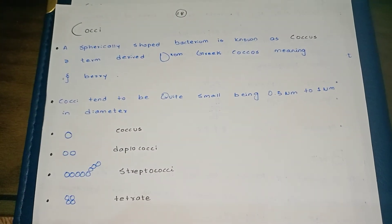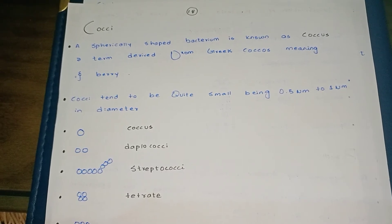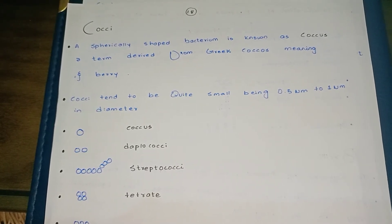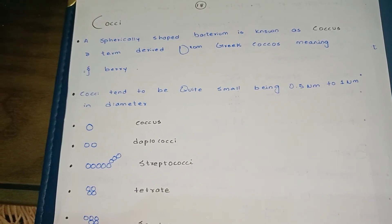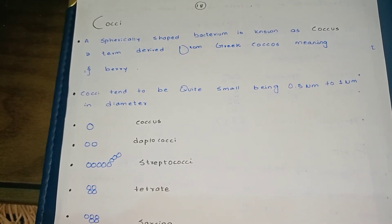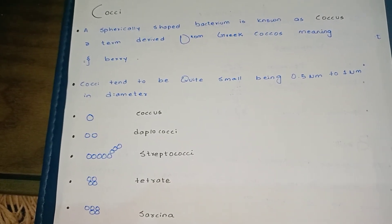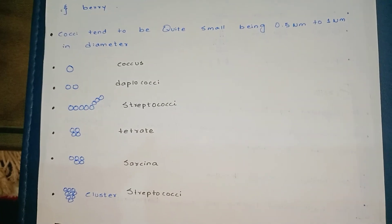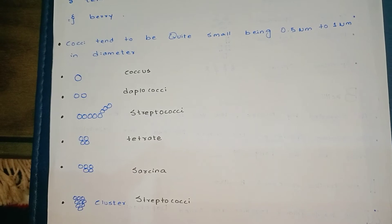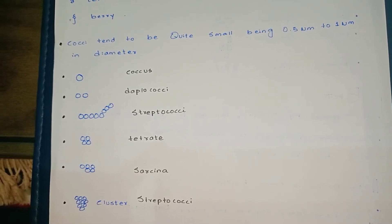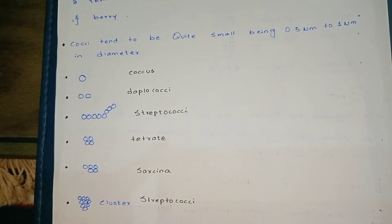A spherical-shaped bacterium is known as coccus, which is round — a term derived from Greek 'kokkos' meaning a berry. Cocci tend to be quite small, being 0.5 to 1 micrometer in diameter. If it is one coccus, we say coccus; if two, diplococcus; if a chain, streptococci; if four in a pair, tetrad; if an irregular group of 5 to 6, sarcina; and if in a cluster like grapes, staphylococci.